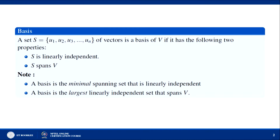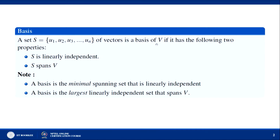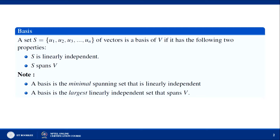First of all, what is the basis? A set S = {u₁, u₂, u₃, ..., uₙ} of vectors is a basis of V if it has two properties. Property 1: S is linearly independent. Property 2: the span of S generates V, meaning span(S) = V — that is, by the linear combination of the elements of S we generate the vector space V.